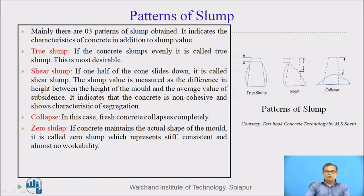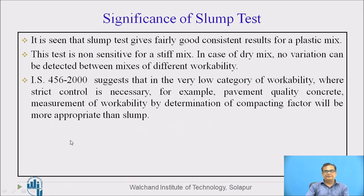The third type is collapse slump — the concrete suddenly collapses when workability is much higher. And one more type is zero slump — there is no change in levels when workability is zero.